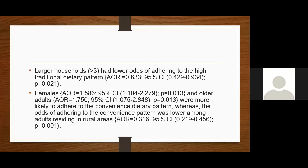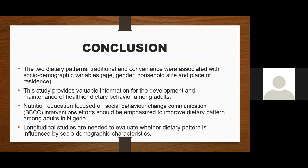In conclusion, two dietary patterns were identified: traditional and convenience. The study provided valuable information for the development and maintenance of healthy dietary behavior among adults. We recommend nutrition education focused on social behavior change communication, as nutrition transition transcends beyond knowledge alone — people need behavioral change, not just information. We also recommend that longitudinal studies be conducted to evaluate whether dietary patterns are influenced by social demographic characteristics in the long run. Thank you very much for listening.